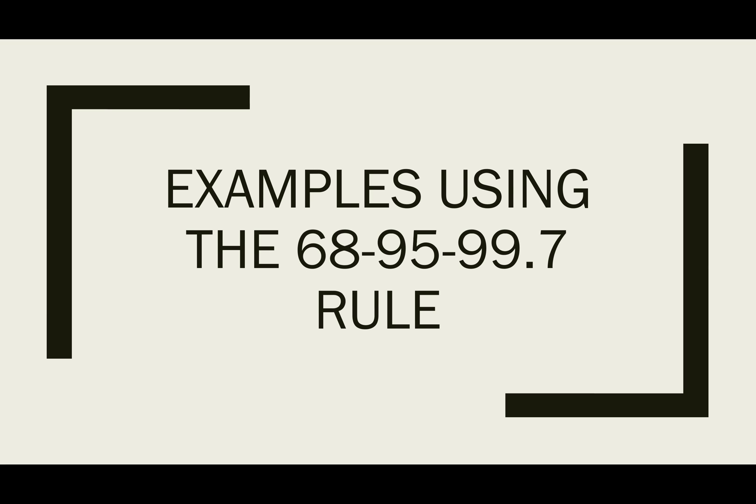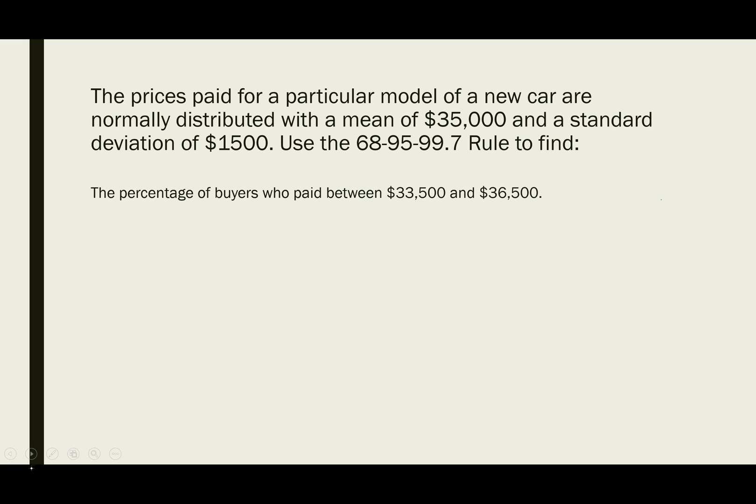In these examples, we're going to take a look at using the 68-95-99.7 rule to determine what percentage of data objects satisfy certain conditions or are between two certain data values. Our problem states that prices paid for a particular model of a new car are normally distributed with a mean of $35,000 and a standard deviation of $1,500. We want to use the 68-95-99.7 rule to find the percentage of buyers who paid between $33,500 and $36,500.